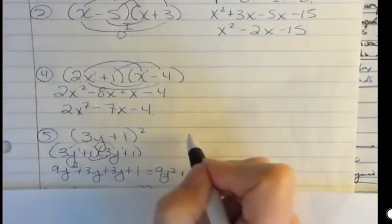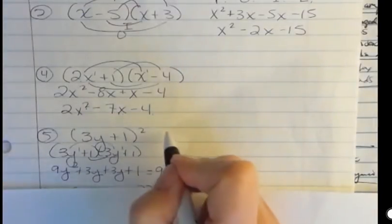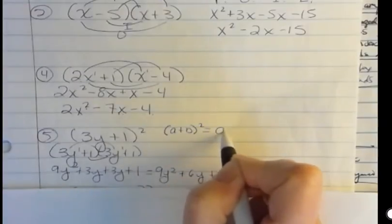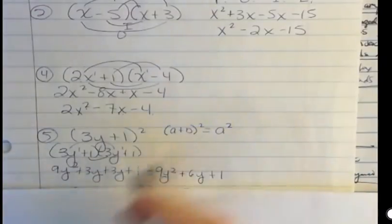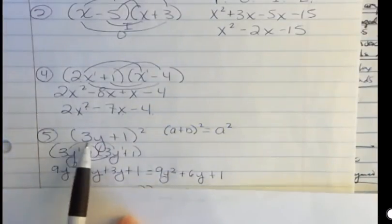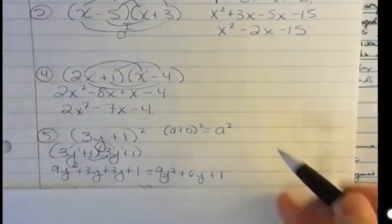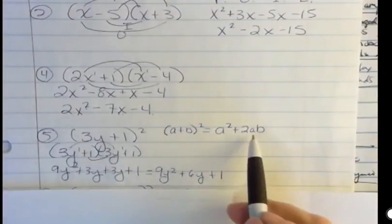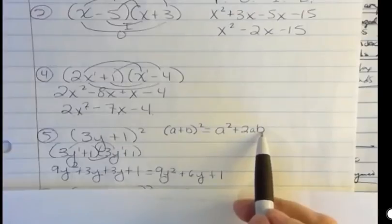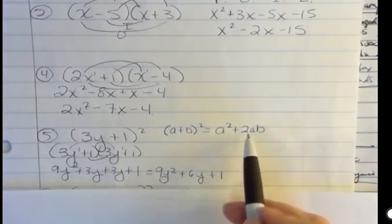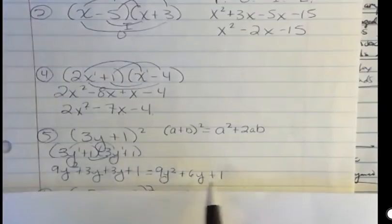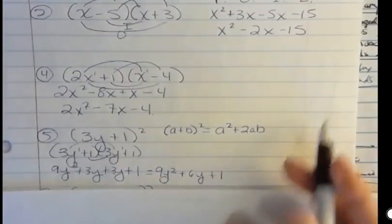But there's also a formula that says when you have a binomial squared, we'll call this a plus b squared. The answer is always going to be a squared. Our a was 3y. 3y times 3y is 9y squared. Yep, that worked. Plus 2ab. Ab means you're going to multiply your first term times your second term, and then you're going to double it. 3y times 1 is 3y, doubled is 6y. So yes, that makes sense.